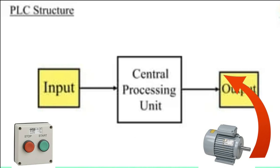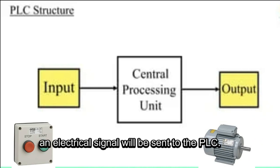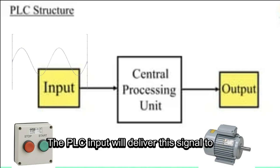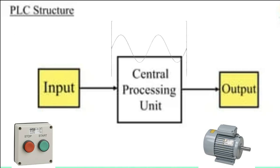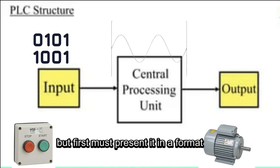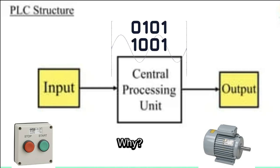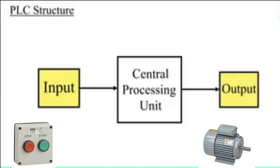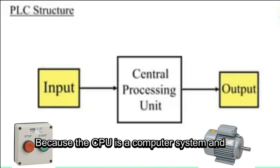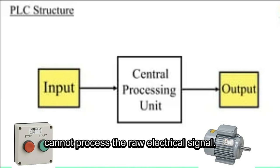Now, if we press the button, an electrical signal will be sent to the PLC. The PLC input will deliver this signal to the CPU, but first must present it in a format that the CPU can process. Why? Because the CPU is a computer system and cannot process the raw electrical signal.